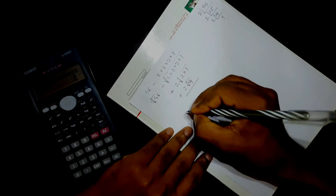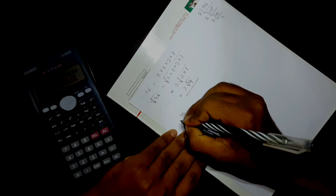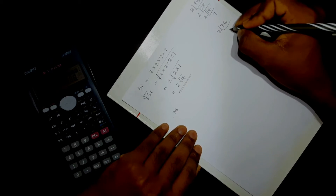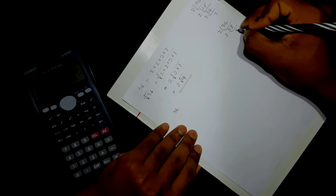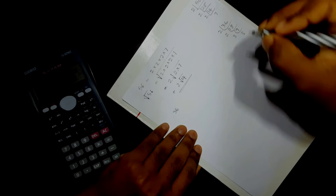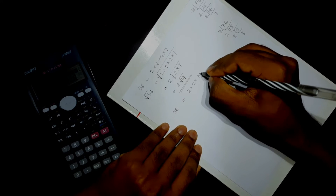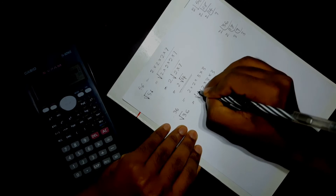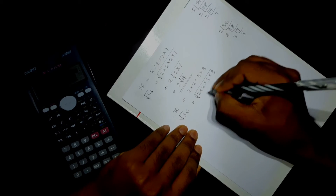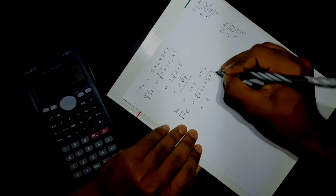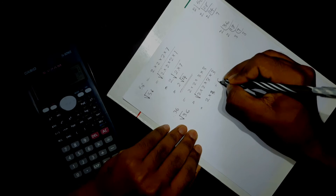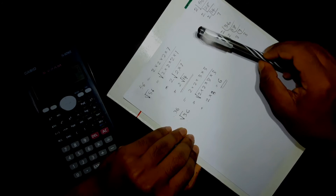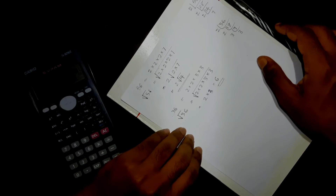We will now factorize 36. We need to divide by 2. So we get 2 × 3 × 3 for the prime factorization of 36.